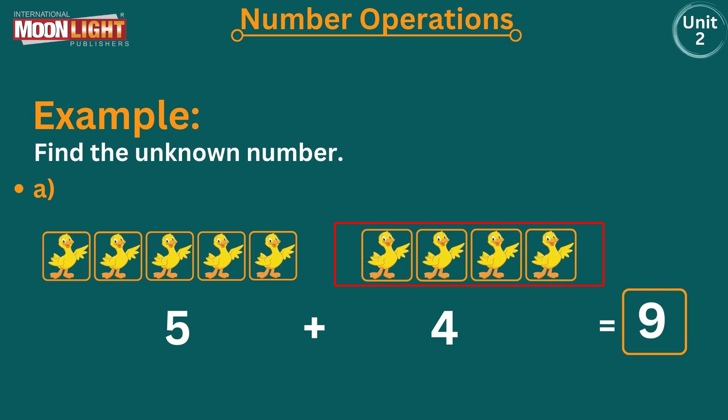Now another group of ducklings is given. Count by yourself: one, two, three, four — there are four ducklings. Write the number four in the next empty box after the addition symbol. Now combine and count them all together: one, two, three, four, five, six, seven, eight, nine. Write nine in the empty box after the equals sign — nine is the sum.